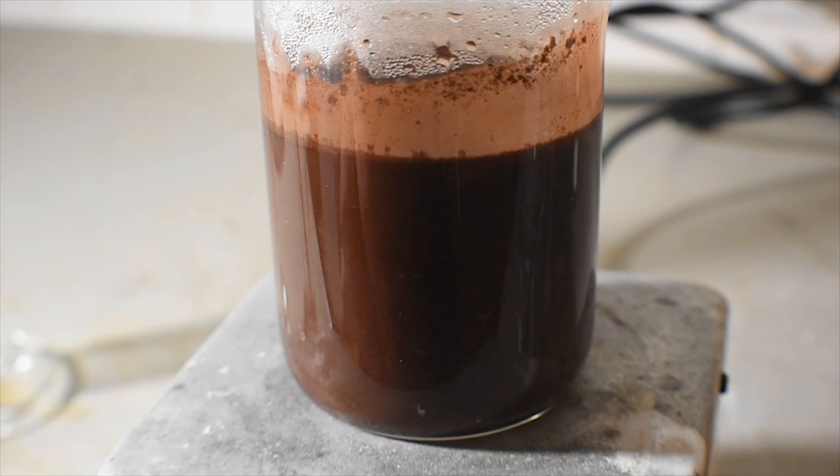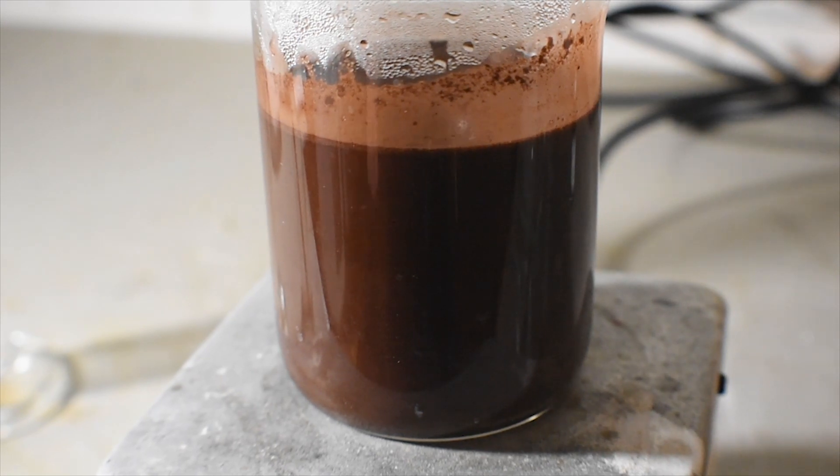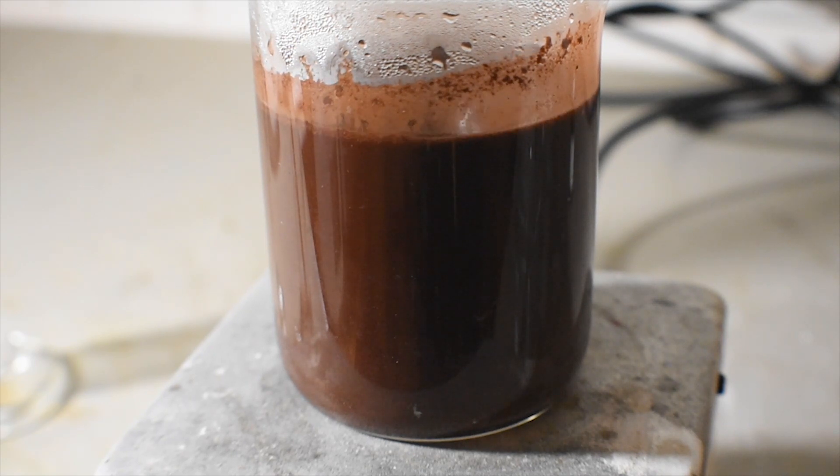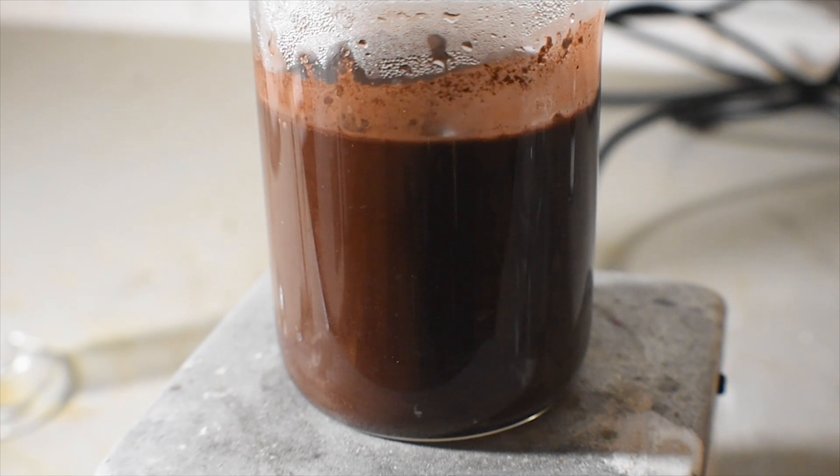Once all the persulfate has been added, we are left with a fine chocolate brown precipitate of our silver two complex. This can then be filtered off and dried.